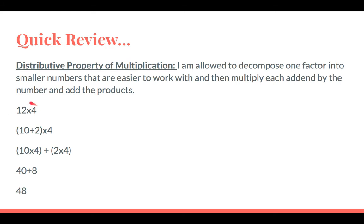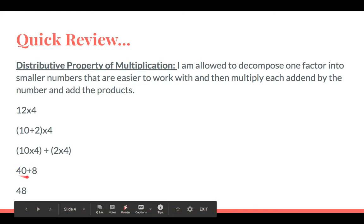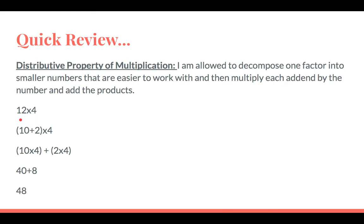An example is 12 times 4. 12 is tricky, so I'm going to decompose 12 into 10 plus 2. Now I distribute the 4 to both: 4 times 10 is 40, and 4 times 2 is 8. Adding those together gives 48, and 12 times 4 is 48. You want to decompose your biggest or trickiest factor into two numbers that are easy to multiply.